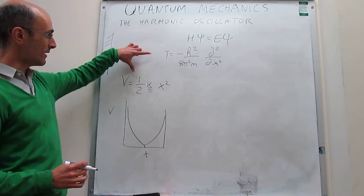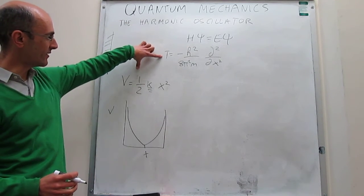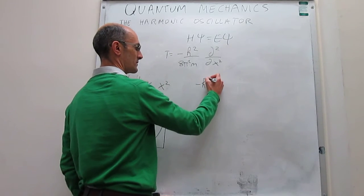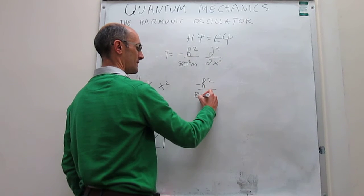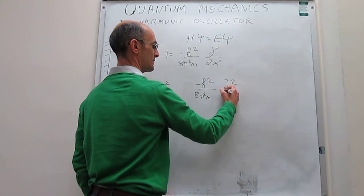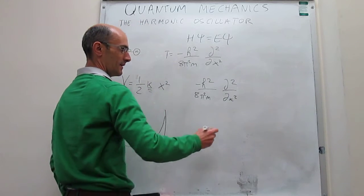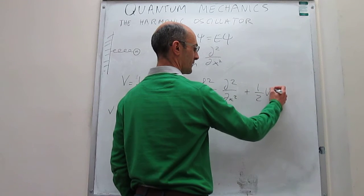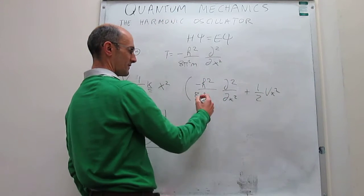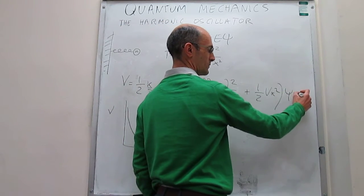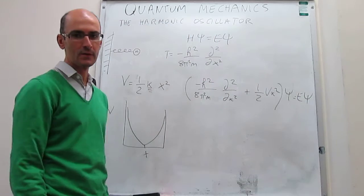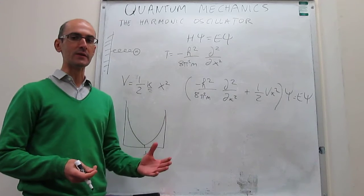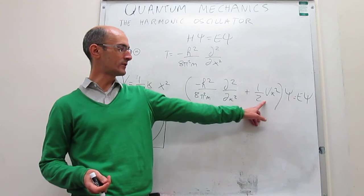So the Hamiltonian operator now has both a kinetic energy term and a potential energy term. The Schrödinger equation turns into: minus h-bar squared over 4π²m times the second derivative of the wave function with respect to x, plus one-half times kx² applied to the wave function, equals the energy times the wave function. That is the Schrödinger equation we have to solve — a one-dimensional problem, but with the complication of a potential energy term.